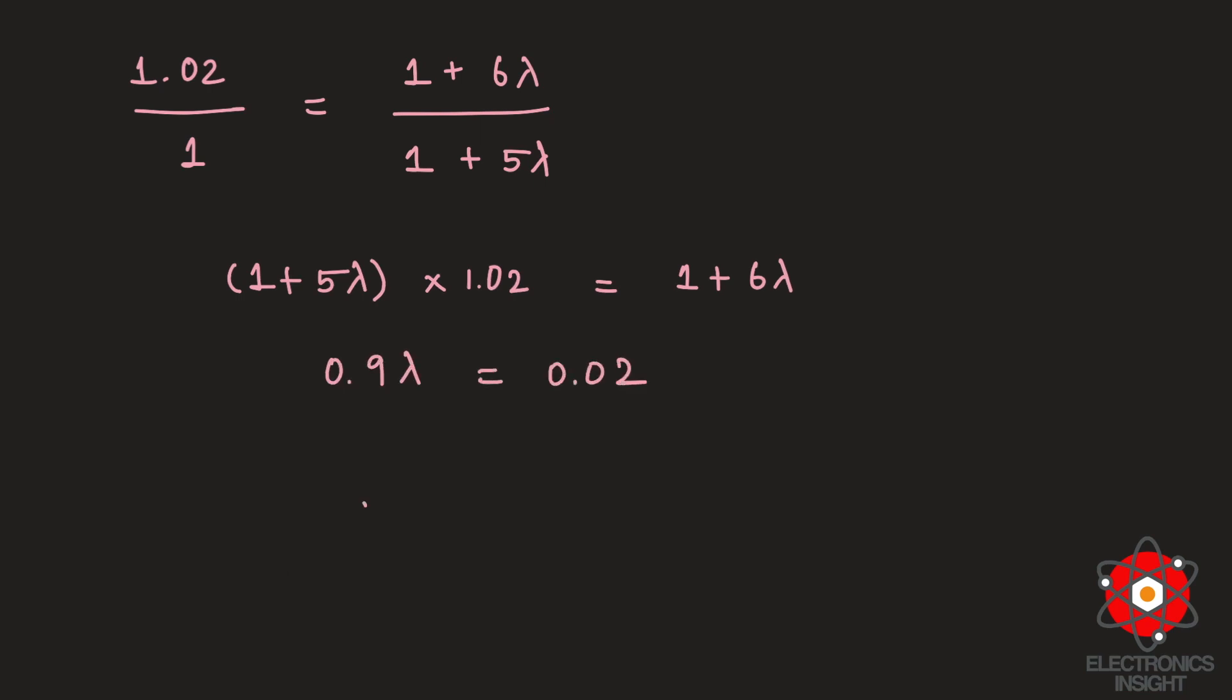Therefore, lambda, the channel length modulation parameter, is equal to 0.02/0.9, which equals 0.022 V^(-1).